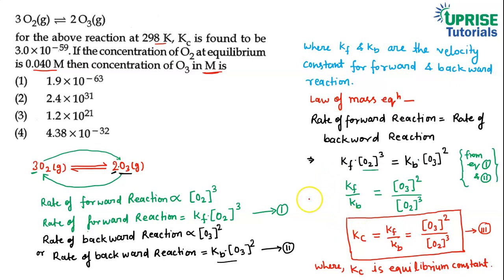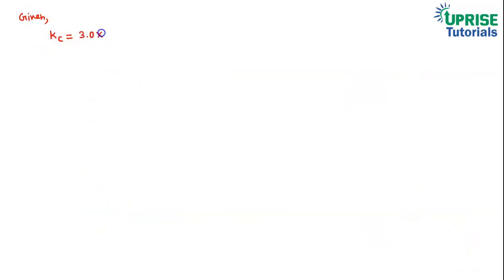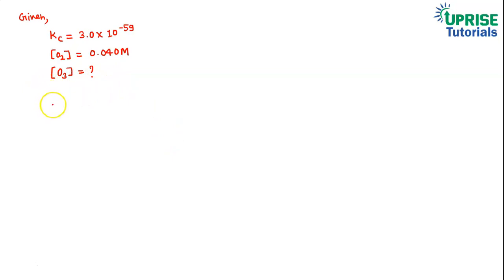Now using Equation 3 to solve the problem: Kc is given, and [O₂] at equilibrium is also given, so we can easily find [O₃]. Given: Kc = 3.0 × 10⁻⁵⁹, [O₂] = 0.040 M. We need to find [O₃]. We will put all values into Equation 3.